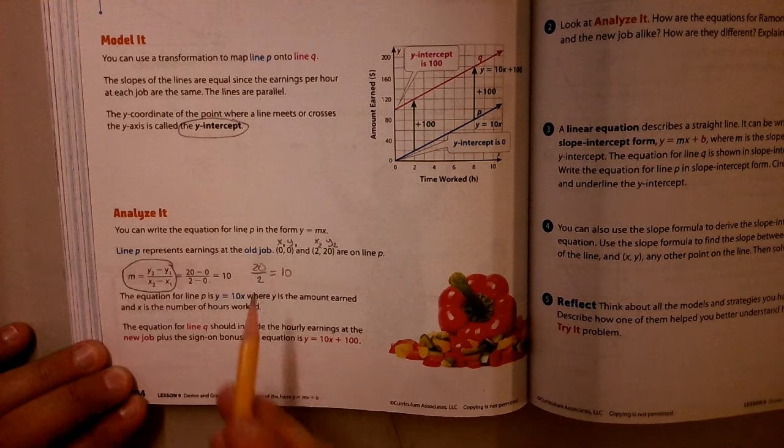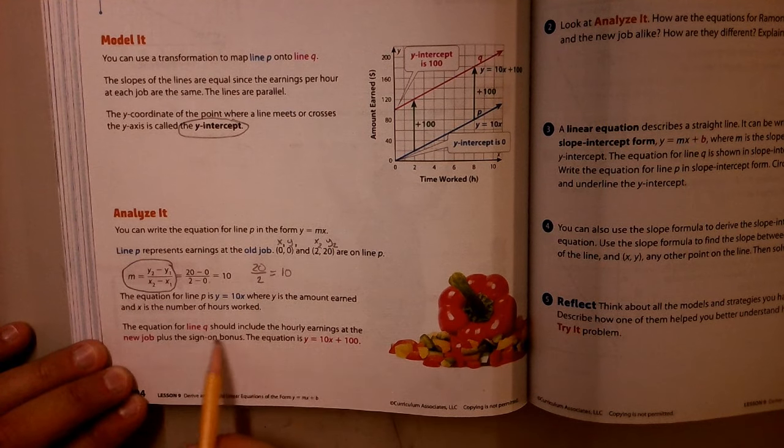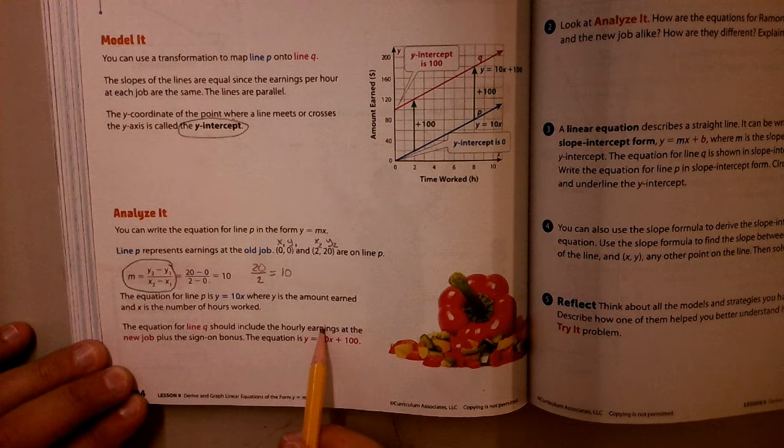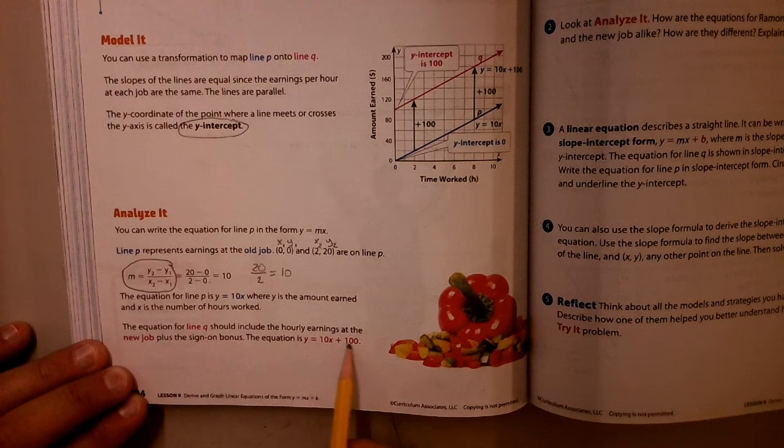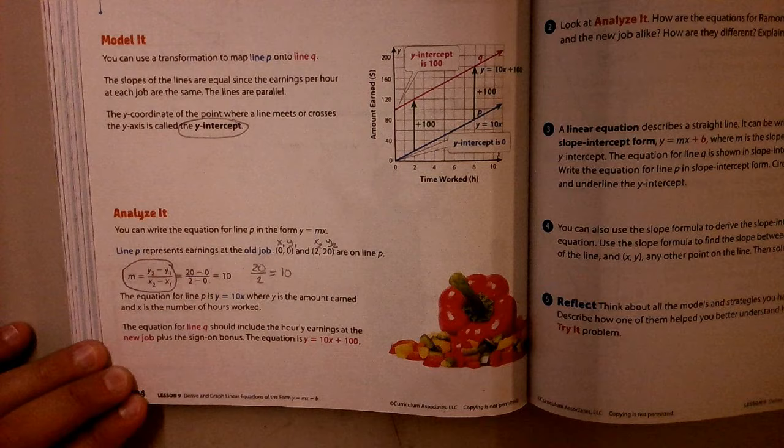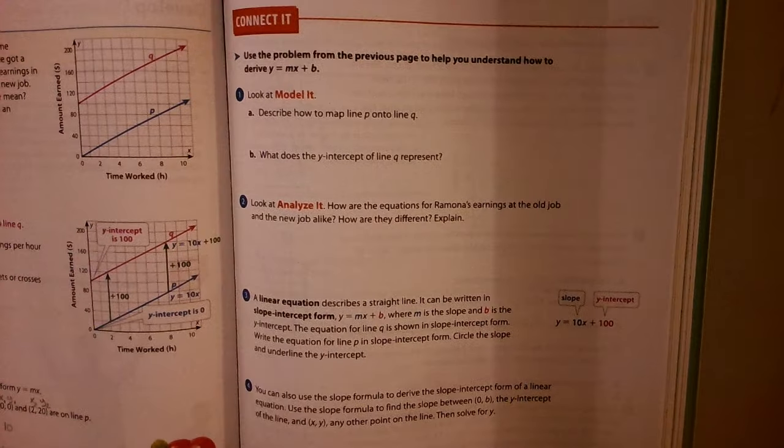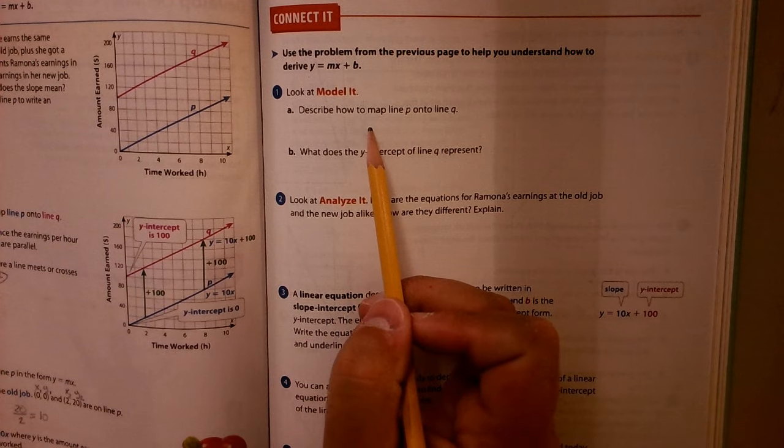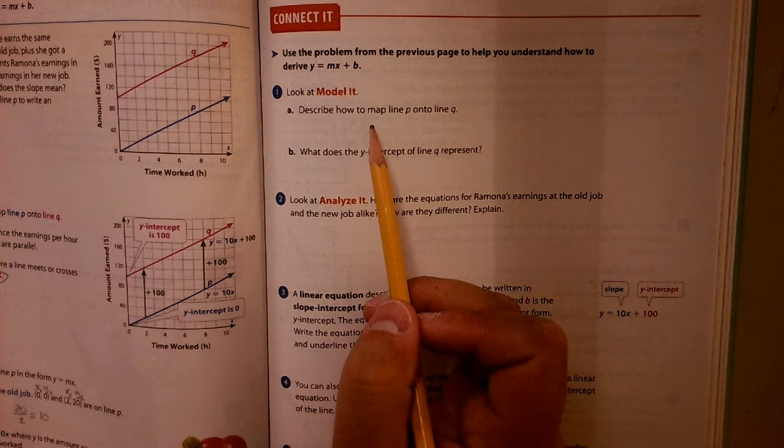So that's our equation for P. And then it talks about how line Q needs to include the hourly earnings, which is the 10, but also that $100 sign-on. That's why we have that plus 100 there at the end. Now let's answer some questions here. We already talked about this. Describe how to map line P onto line Q.